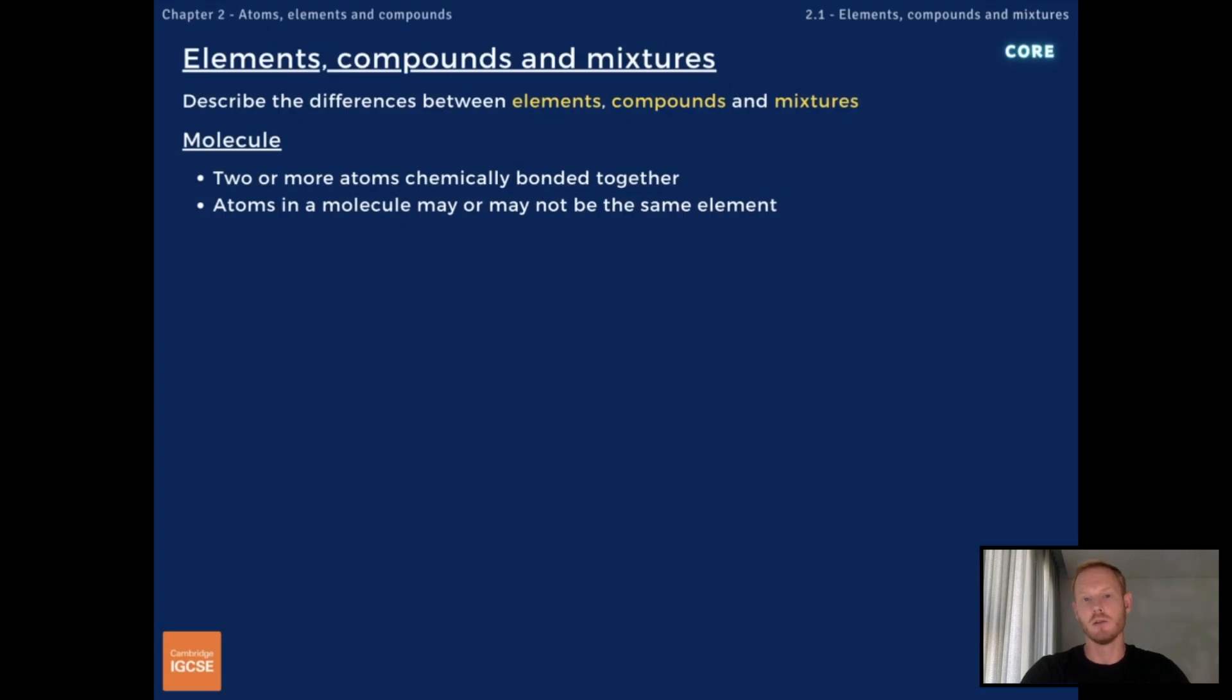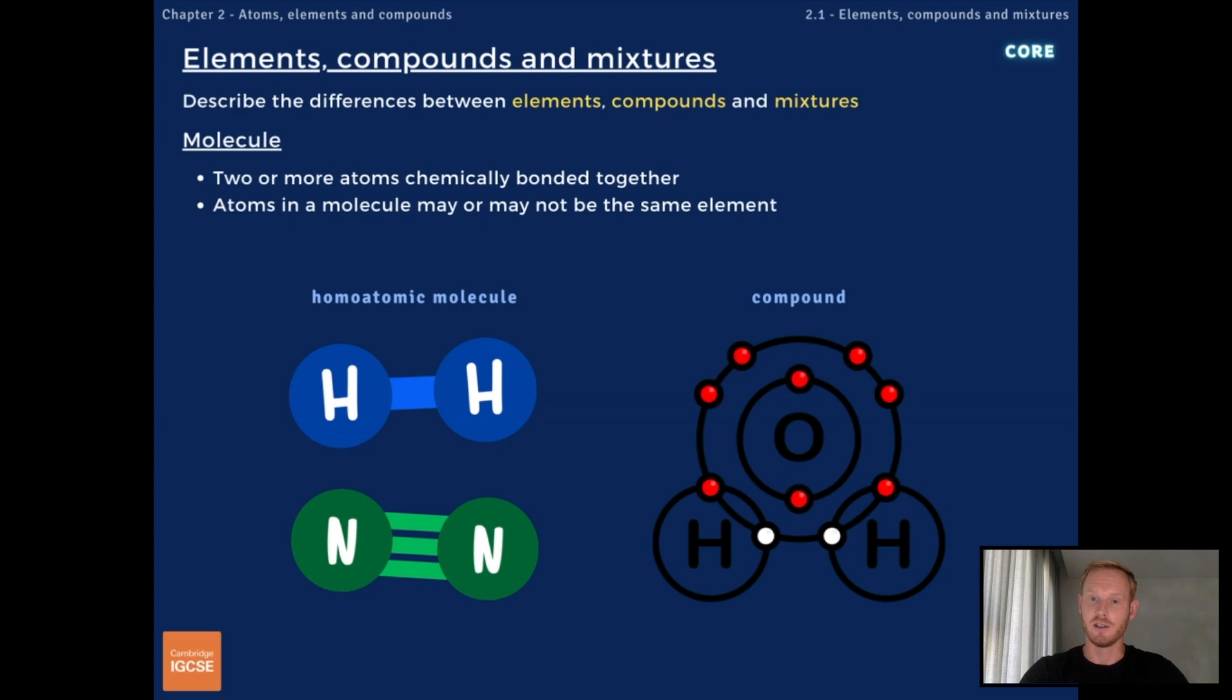Now, before we move on to compounds, I just want to quickly introduce the term molecule. So, a molecule is a group of atoms covalently bonded together. And don't worry, we'll cover covalent bonding in topic 2.5. Molecules can be made of atoms of the same elements, and these are referred to as homoatomic molecules, or different elements, and these are called compounds.